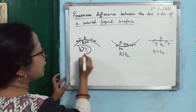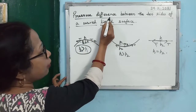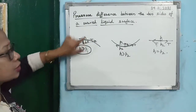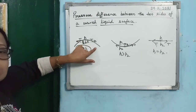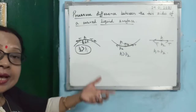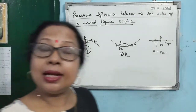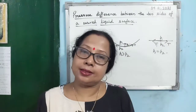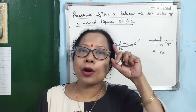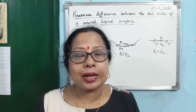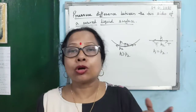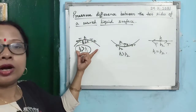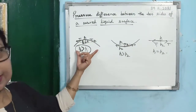There is a pressure difference between the two sides of the curved surface, and the pressure is greater on the concave side. This is the key point to remember — concave side pressure is more. This analysis was for the convex meniscus.